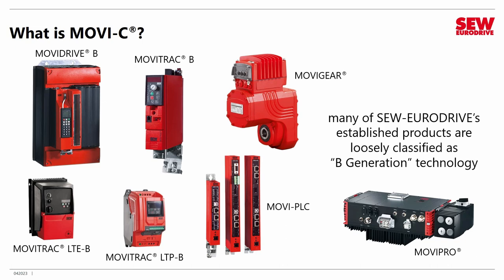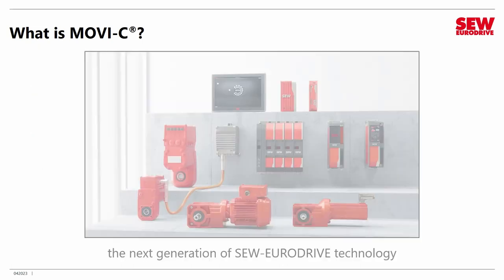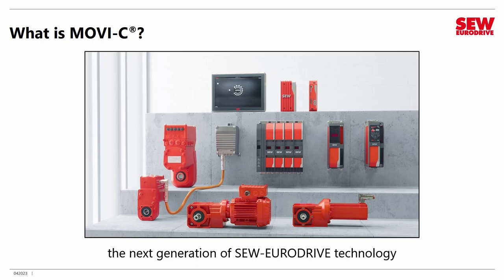MoviC is what we call the C generation of products. MoviC, to answer it very simply, is the next generation of SEW EuroDrive technology. As you can see from the picture here, it has a new fresh look and includes many components: new variable frequency drives, new decentralized drives, new controllers, and products such as intelligent motors that communicate over hybrid cables and provide a digital data stream to the devices they're connected to. MoviC is an exciting new product line expected to become the backbone of SEW EuroDrive electronics for many years to come.